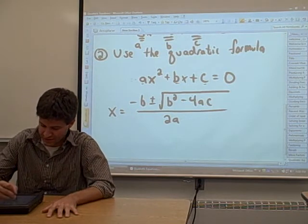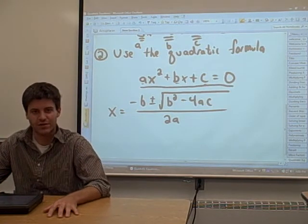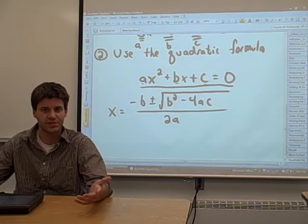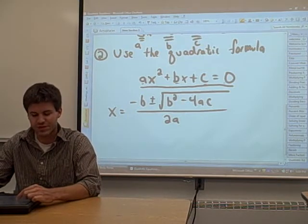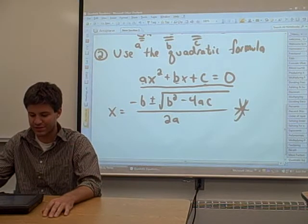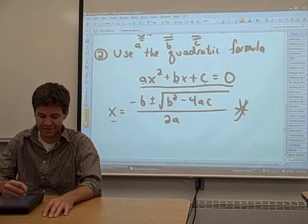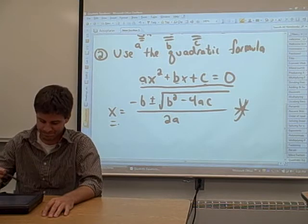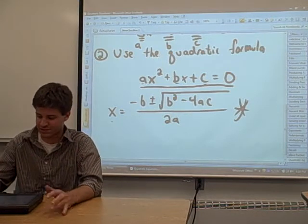So given this quadratic equation, A, B, and C are some numbers that you're given, you can take those numbers, plug it in to this quadratic formula here, and get your answer for x. Now I know that's kind of ugly looking. Let's do an example.